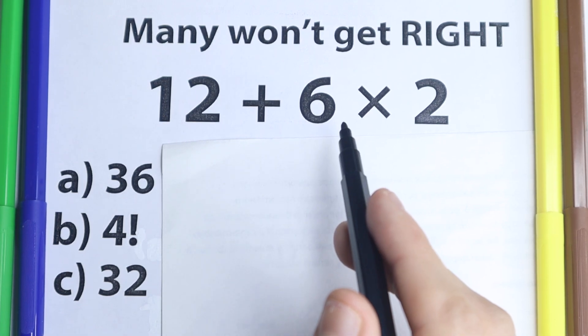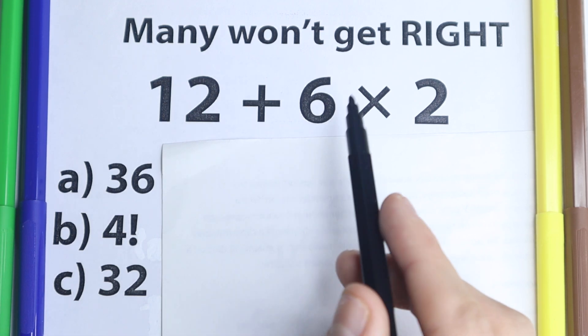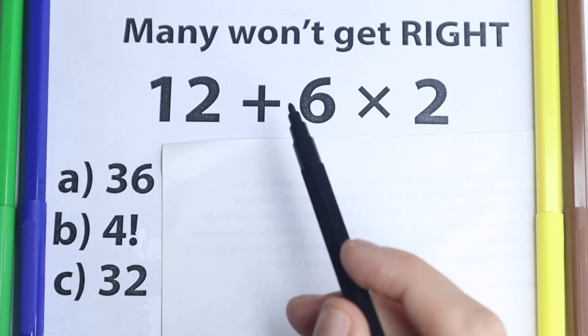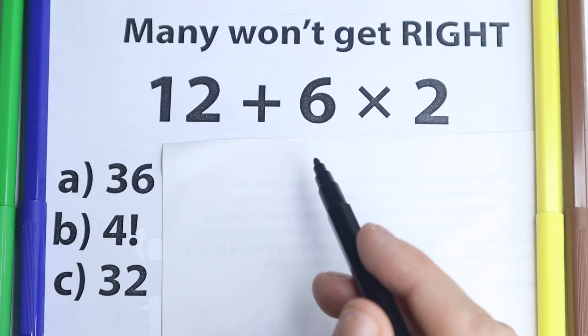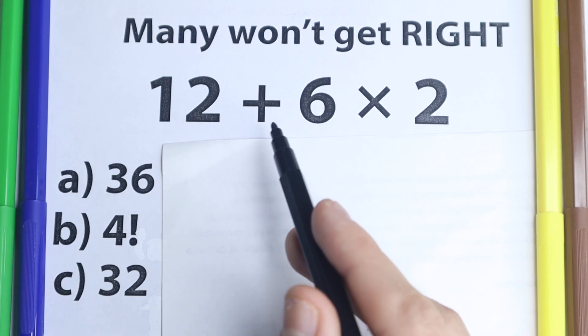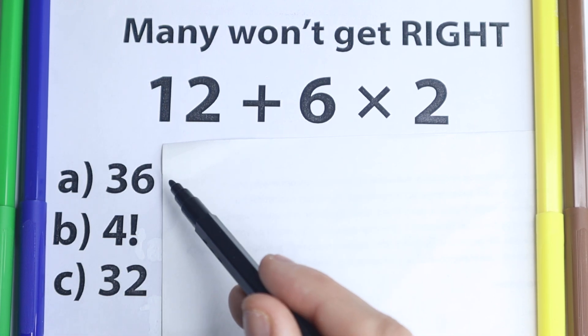Of course most of you out there are like yes I can handle this problem, this is basic addition, basic multiplication, I learned this stuff in the third grade, that's fantastic. So go ahead and put your answer down into the comment section. We have three options: option A, option B, option C.